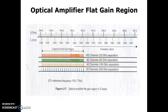This slide shows the optical amplifier's flat gain region for 20-channel, 40-channel, 80-channel, and 60-channel configurations, with 200 GHz, 100 GHz, 50 GHz, and 25 GHz separation, respectively.